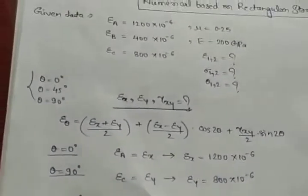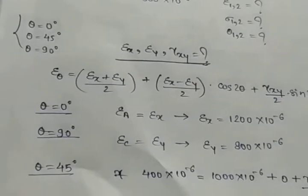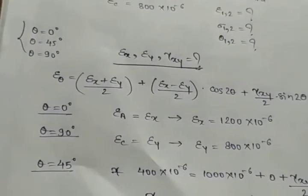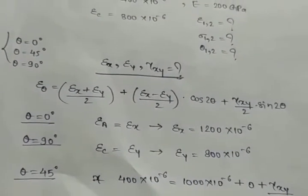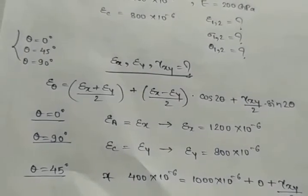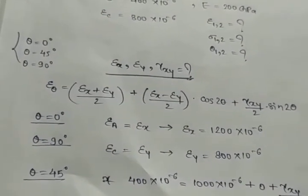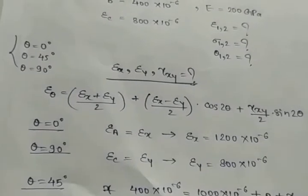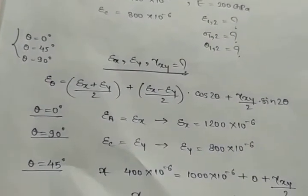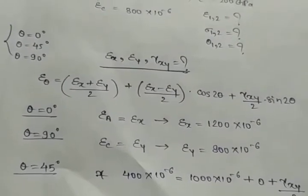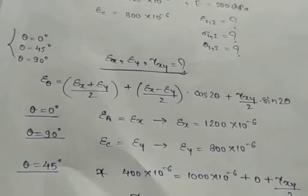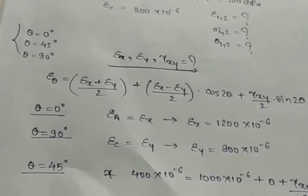Firstly, we consider theta equal to 0°. Putting theta = 0° into the formula, the result epsilon_a equals epsilon_x, so epsilon_x = 1200 × 10⁻⁶. Next, putting theta = 90°, epsilon_c equals epsilon_y, so epsilon_y = 800 × 10⁻⁶.